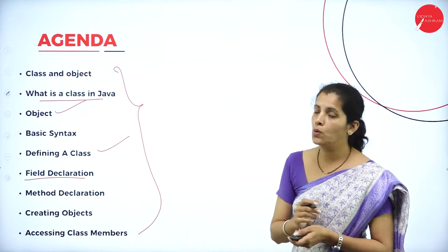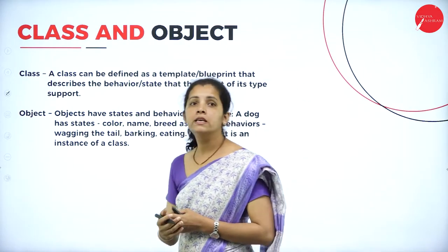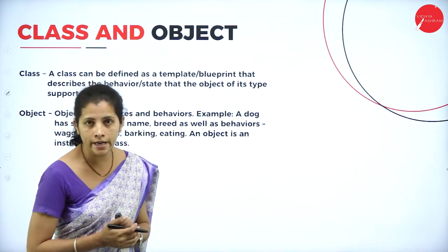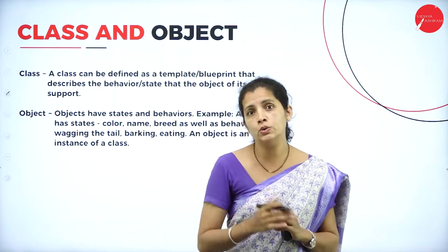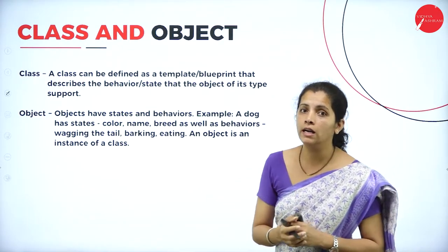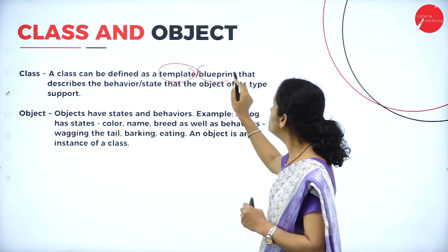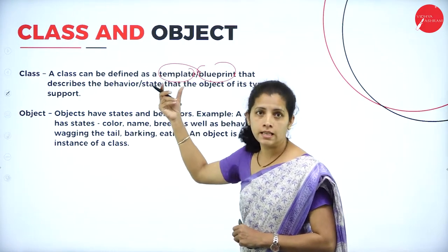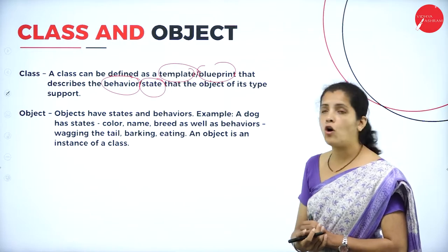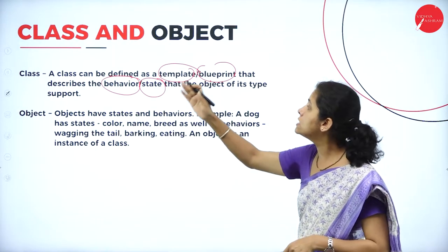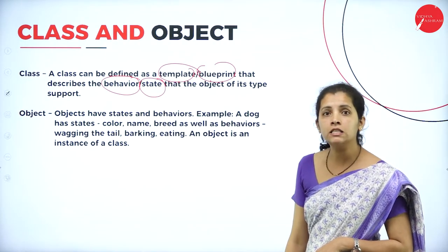These are the basic concepts you must know to write programs. First, let's look at classes and objects. A class is an example of a user-defined data type — that is, the user defines his or her own data type. A class is nothing but a template or blueprint that describes the behavior as well as the state of the object.